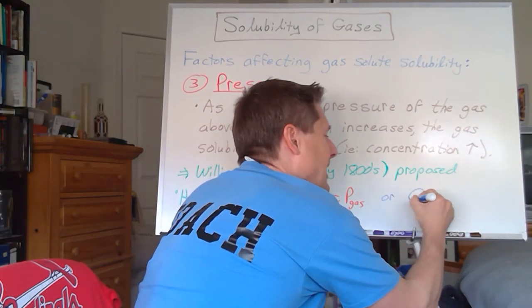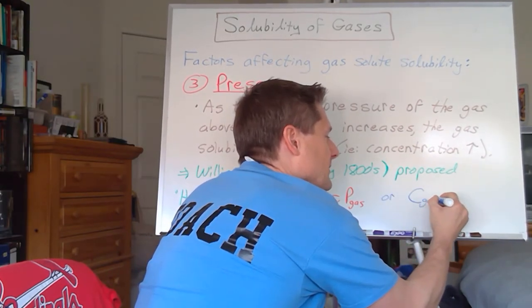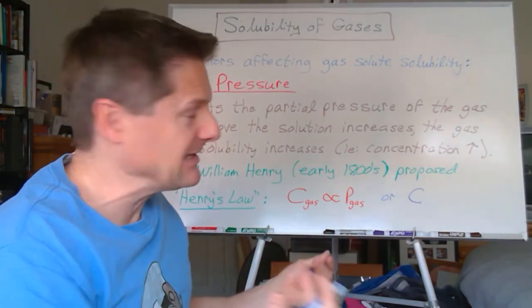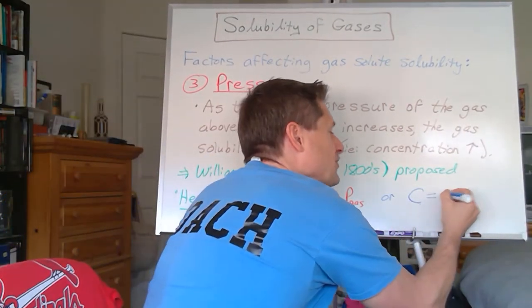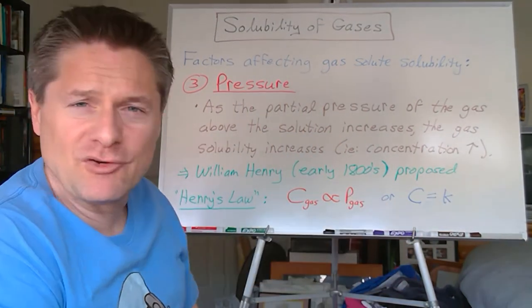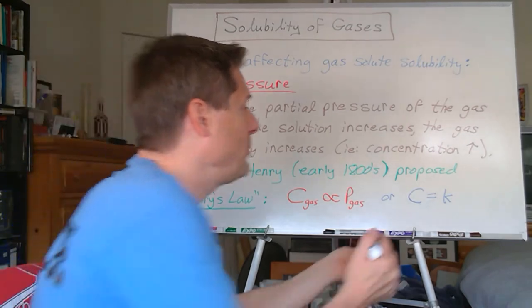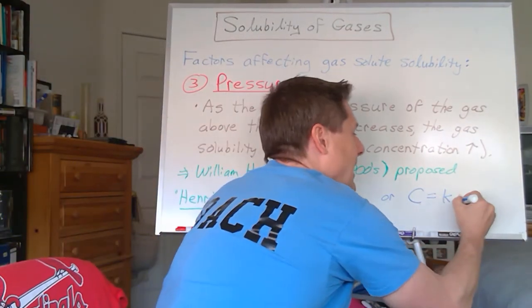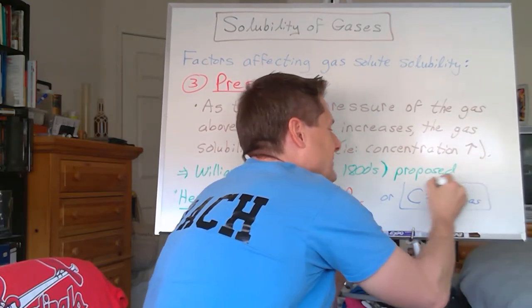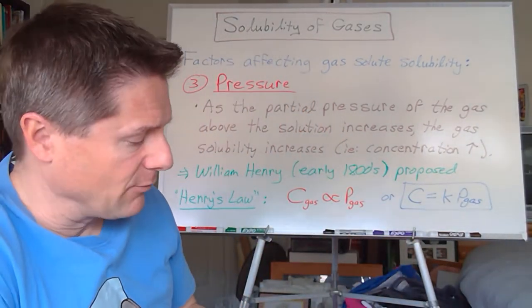So we could say the concentration of the gas, and I'm just going to go C, that's the concentration of the gas in the solution, will be equal to some proportionality constant, right? Sometimes you'll say A, B, whatever. We did this for some of the simple gas laws. It will be some constant K times the partial pressure of that gas. So that's what's known as Henry's law.